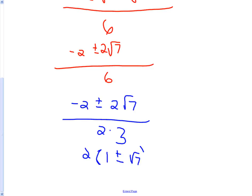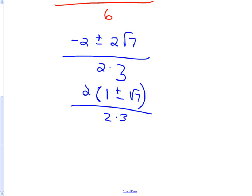And then one plus or minus root seven is left all over two times three. This is an extra step I haven't normally showed you, but that's why it cancels.